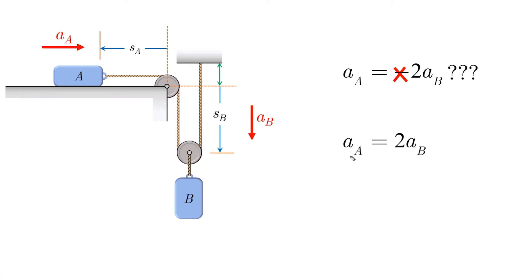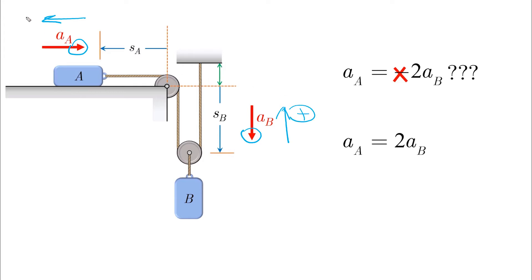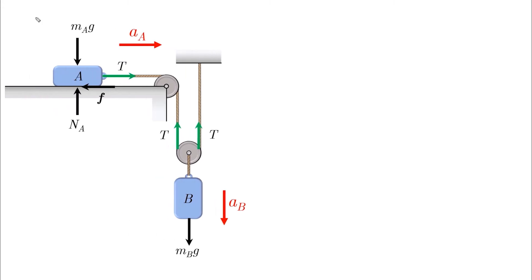The acceleration of A is twice the acceleration of B. Does it matter if you reverse the direction of A or B? No, it doesn't matter at all, as long as a positive acceleration of A leads to a positive acceleration of B and vice versa. If we switch the direction of B, we also switch the direction of A so that positive motion leads to positive motion. Now it's time to draw our free body diagram and kinetic diagram.